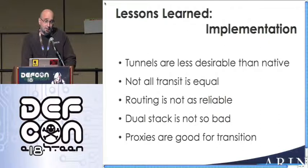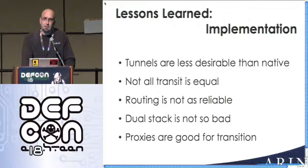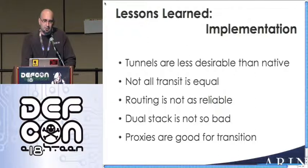Routing is not as reliable as V4, but this has gotten a whole lot better in recent years. When we started, the V6 internet was like the internet of 1989 — really horrible. Now I'd say it's like the internet of 1999 or 2000. You still have routing issues, but they're few and far between. A lot of routing issues are related to growth — people replacing equipment, having capacity problems on old V6 routers, or running experiments in the middle of the day. Things have seen a great deal of improvement.